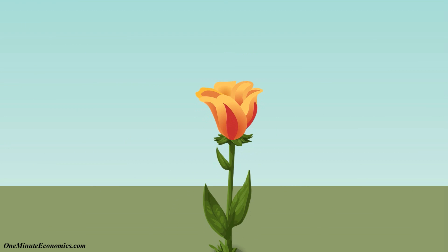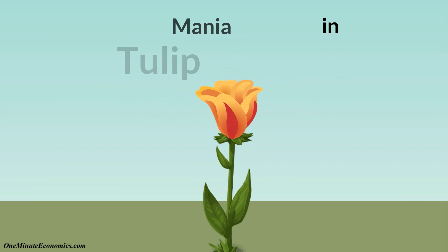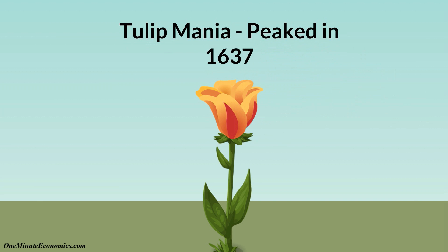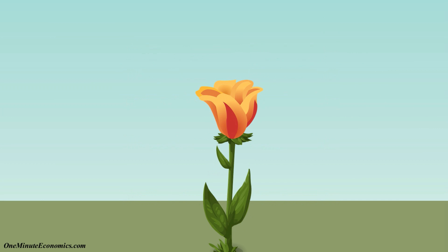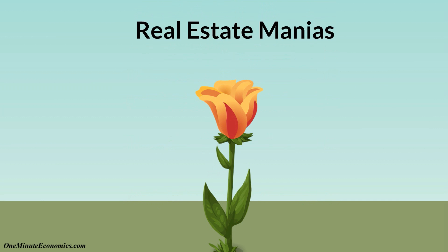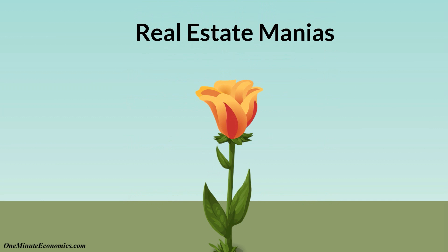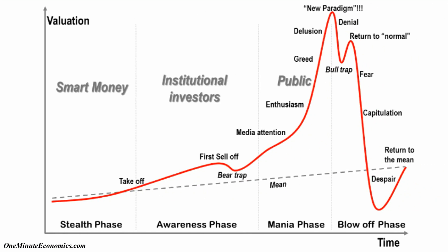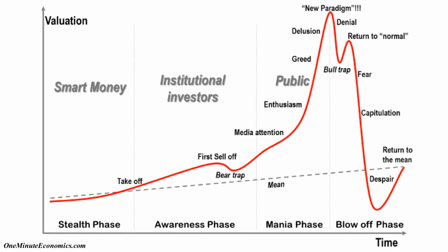Strangely enough, the first recorded asset bubble involved tulips. The tulip mania, as it was called, peaked all the way back in 1637. Lots of other asset bubbles took place after that point, involving stocks, real estate, and so on. Regardless of which asset we're talking about, bubbles tend to follow a similar pattern.